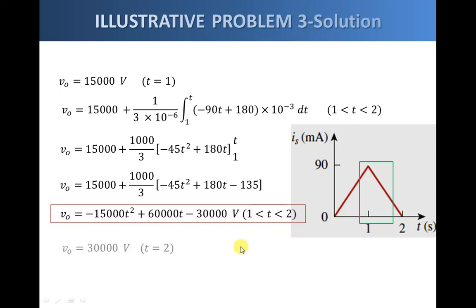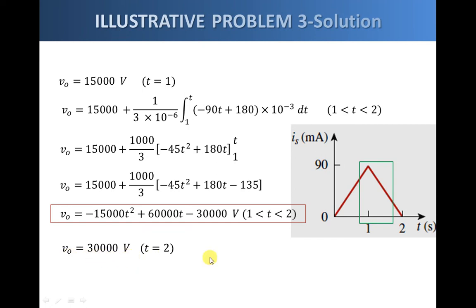We can also get the voltage at exactly t equals two seconds, which is 30,000 volts. So we have a net voltage: as the current rises from zero to a maximum of 90 milliamps, the voltage increases from zero to 15,000 volts. Then as the current decreases from 90 milliamps back to zero, the voltage keeps increasing and reaches a maximum value of 30,000 volts at two seconds.